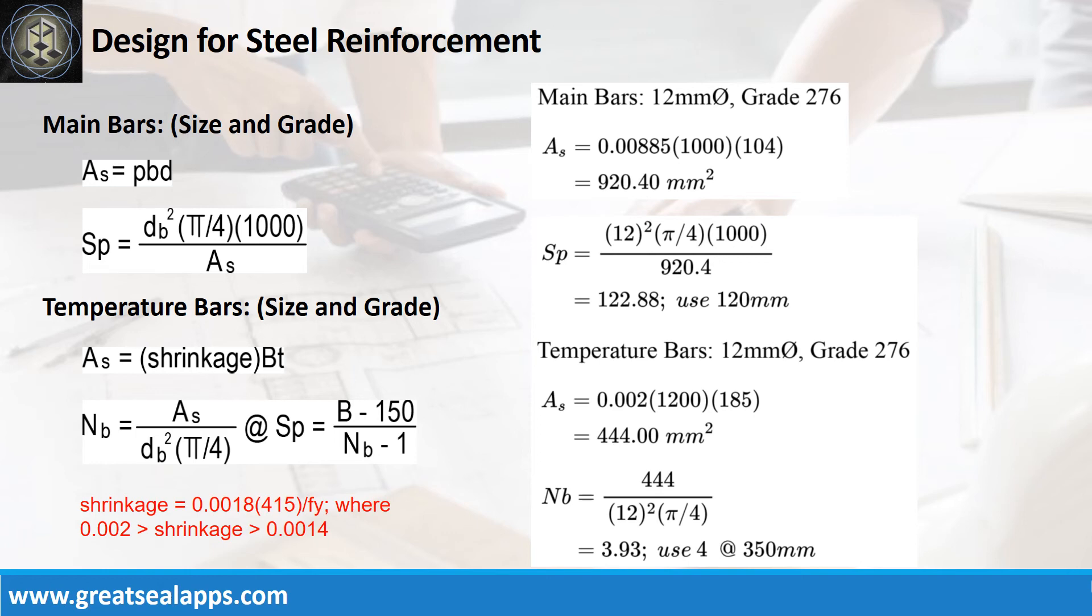The area of steel for temperature bars is 444 square millimeters, and the number of bars for 12mm bar is 4.